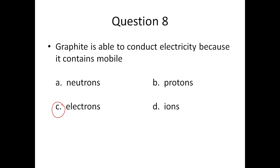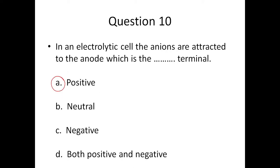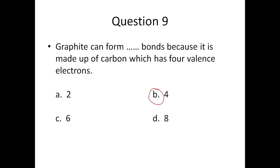Question eight: graphite is able to conduct electricity because it contains mobile electrons — the answer is C. Question nine: the answer is B. Graphite can form four bonds because it has four valence electrons.